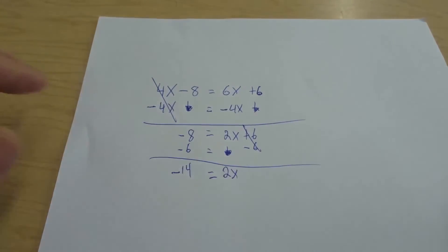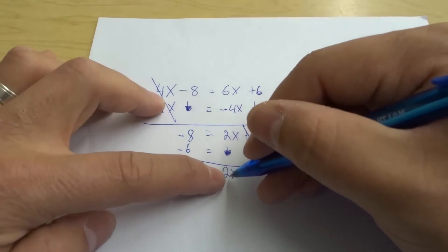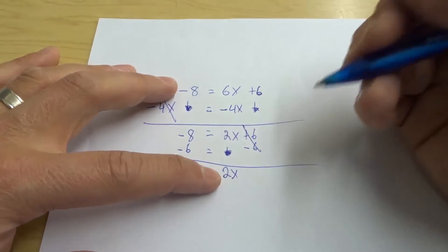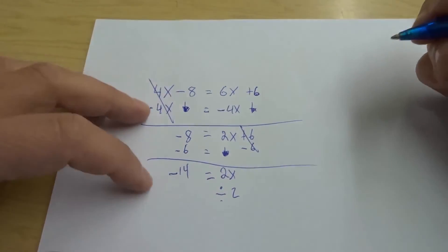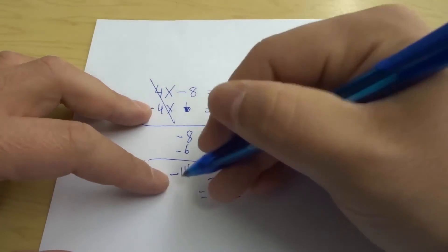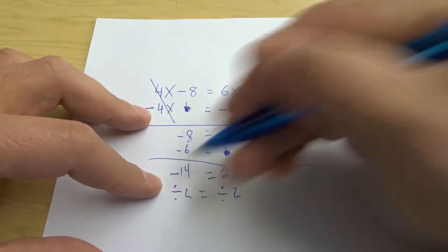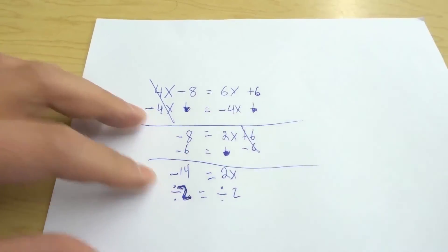Now what we have to do is we have to get rid of the 2 to isolate just the x. So if we're multiplying by 2 because x times 2 is what we have here inverse operations means we have to do the opposite so we have to actually divide by 2. Very simple and then we have negative 14 do the same thing to this side which is divide by 2.